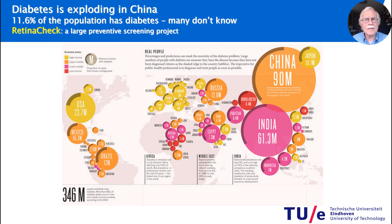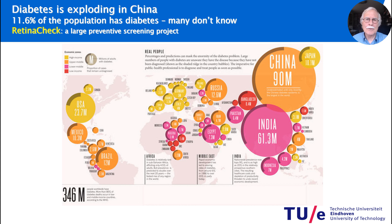It is in particular in Asia that diabetes is exploding. For example, in China, 11.6% of the population has diabetes and many don't know. That is why we were asked by a large group of ophthalmologists and hospitals in China to set up a large screening program and help them write software to analyze the many retinal images they were aiming to acquire. The project was called RetinaCheck.